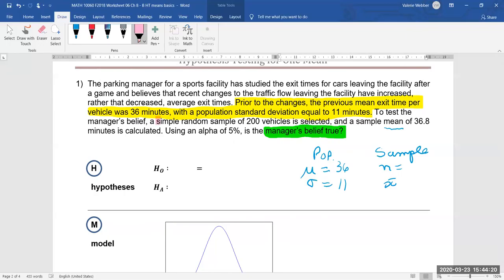Here we have a simple random sample of 200 and the sample mean of 36.8. So our n is 200 and our sample mean is 36.8.